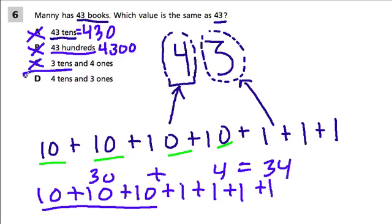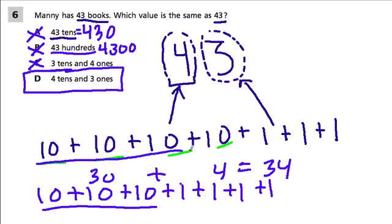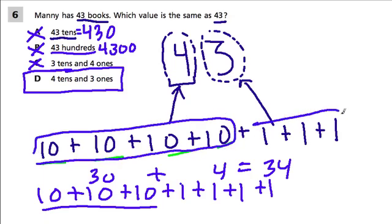So the only one left is D. 43 is four tens and three ones, so the answer is D.